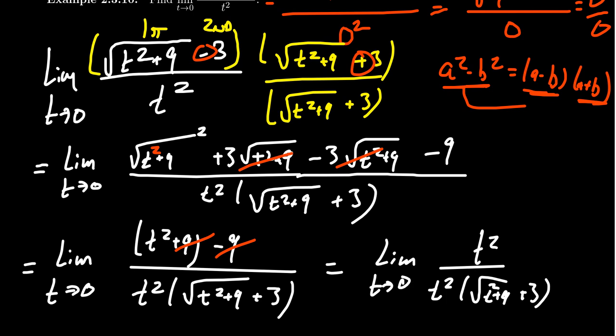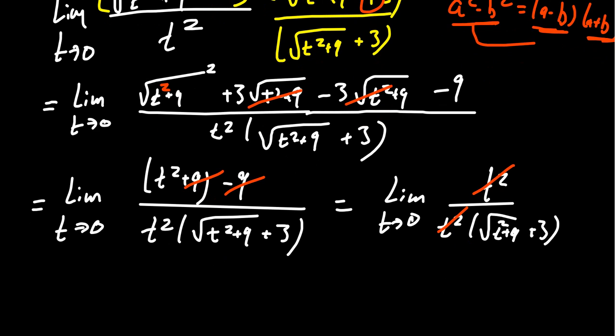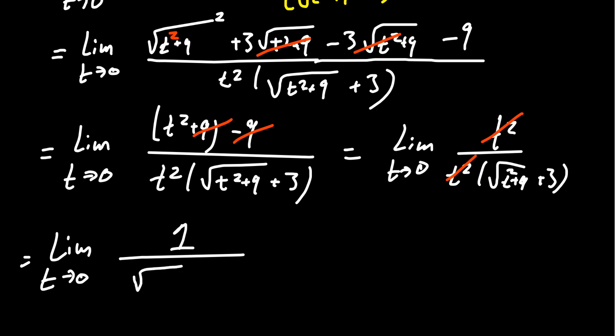You can see the benefit of not distributing the t squared in the denominator. The plus nine and minus nine cancel as well, leaving t squared in the numerator and t squared in the denominator — these common divisors cancel out. We're left with the limit as t approaches zero of one over the square root of t squared plus nine plus three. It's like what we started with, but now it's plus three instead of minus three.